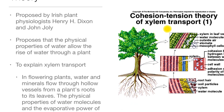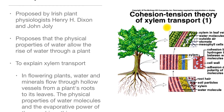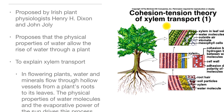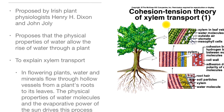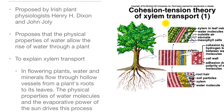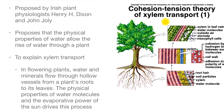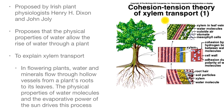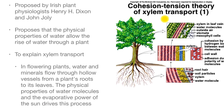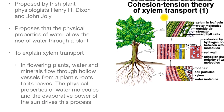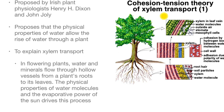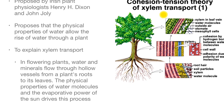In flowering plants, water and minerals flow through hollow vessels from a plant's roots to its leaves. The physical properties of water molecules and the evaporative power of the sun drive this process.